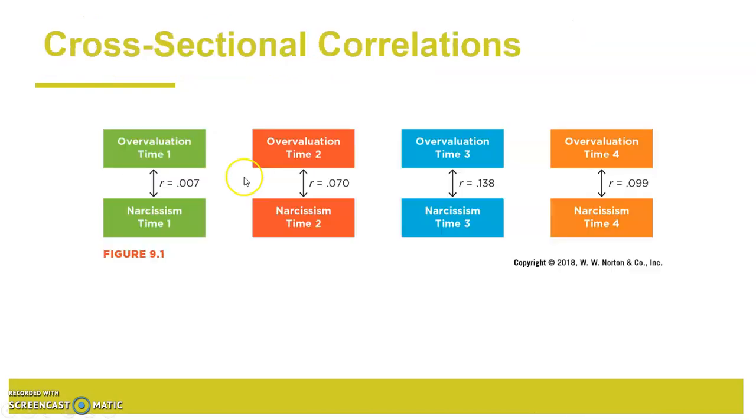So here's an example from your textbook. This is excessive praise for children. Giving children excessive praise, that's overvaluation. We have a self-report of that, or an observational report, and then a report for narcissism.